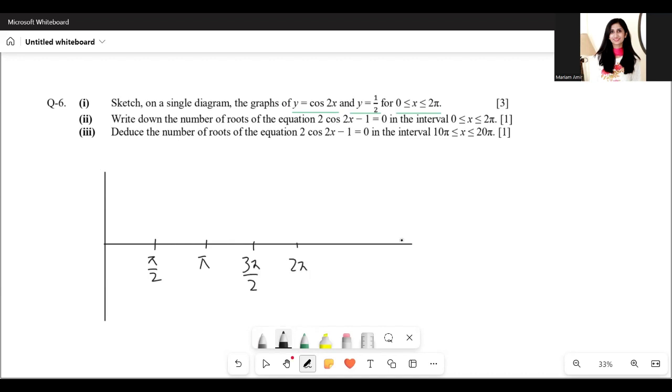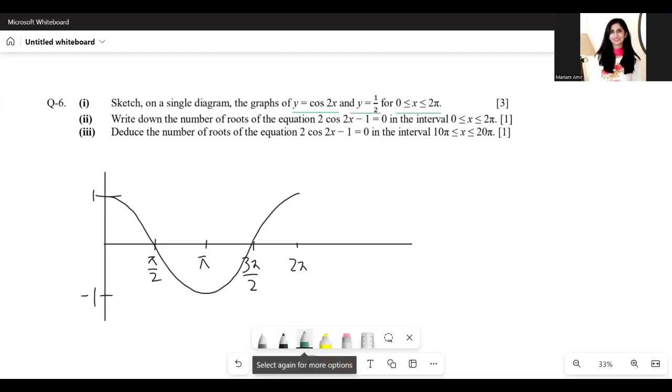Now cos 2x goes like this. Let me draw cos first. Simple cos graph goes like this, it's between 1 and minus 1, but since this is cos 2x, you will get two cycles between 0 to 2π. This is one cycle and you'll get another similar cycle here.